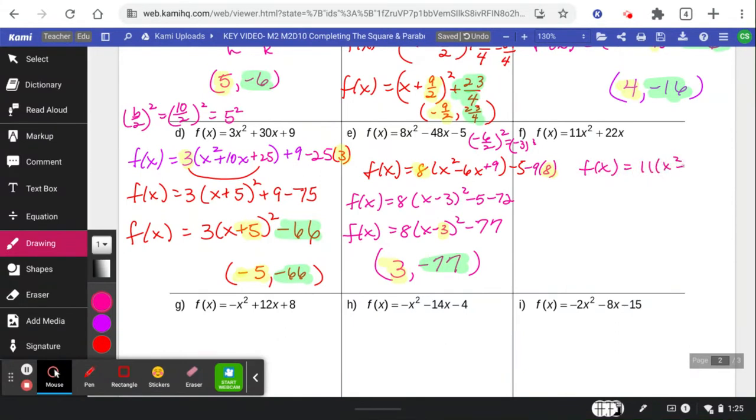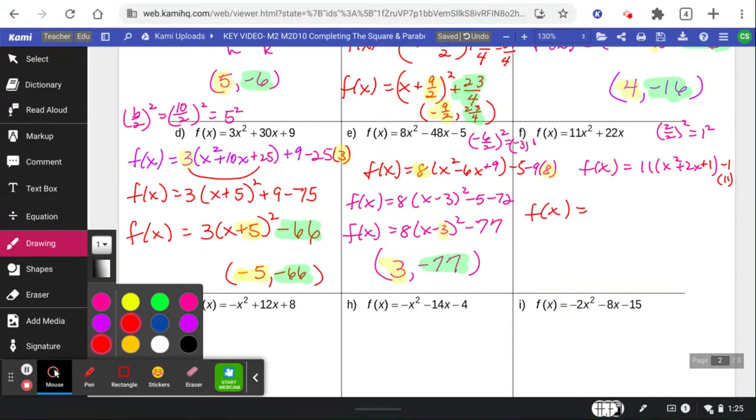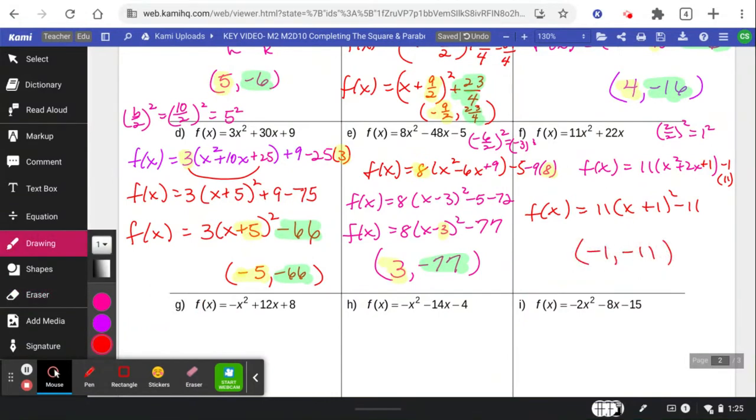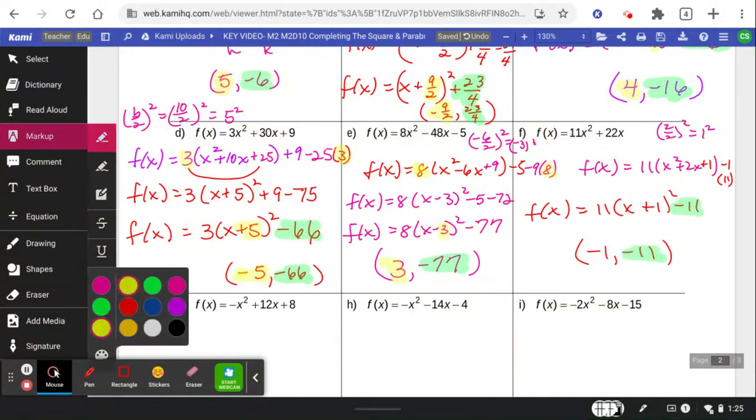Dividing out an 11. Doing the b work on a 2. 2 divided by 2 is 1. 1 squared is just 1. So we add 1, subtract 1 off the back, 11 times. That makes the quantity x plus 1 squared factors minus 1 times 11 is just 11. That's a lot of 1's in that one. And my vertex is negative 1, negative 11 coming from here and here.